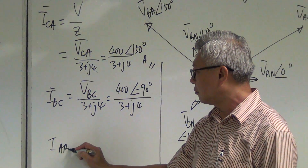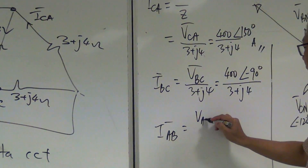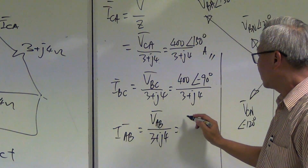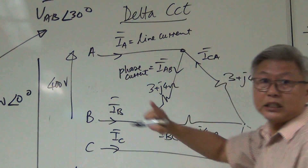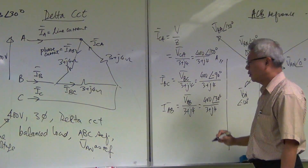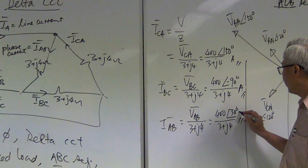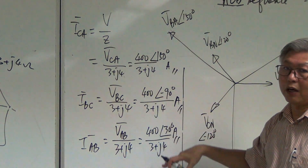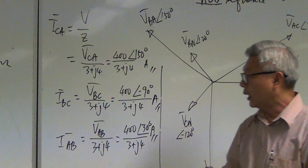The next one is Iab. The voltage is Vab divided by three plus j4, so it's 400. Looking at the phasor diagram, Vab is at 30 degrees, divided by three plus j4. With that I get the answers. Remember, complex number division is in polar form, so you find Ica, Ibc, and Iab.